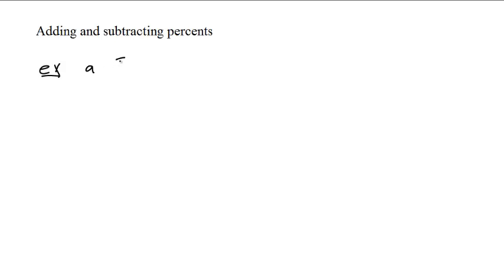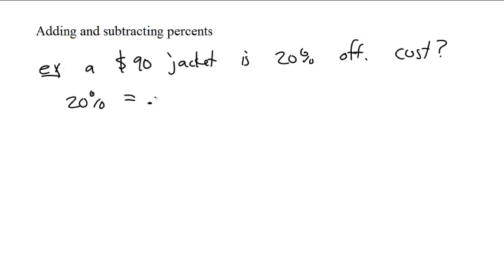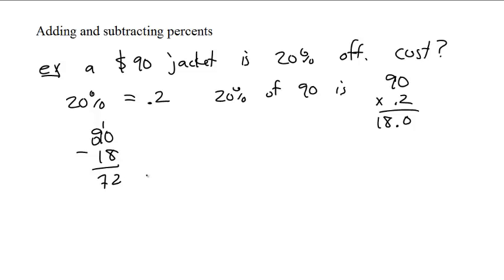For example, let's say a $90 jacket is 20% off. It's a pretty common problem. How much is it? What is the cost? Well, a lot of people do it this way. They say 20% is 0.2. They move the decimal place over. Then they say 20% of 90 is 90 times 0.2, and we get 18. Then they say 90 dollars minus 18 is 72 bucks. And that's fine.